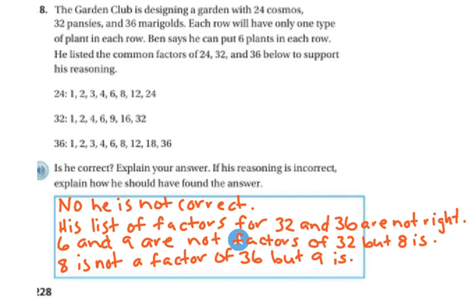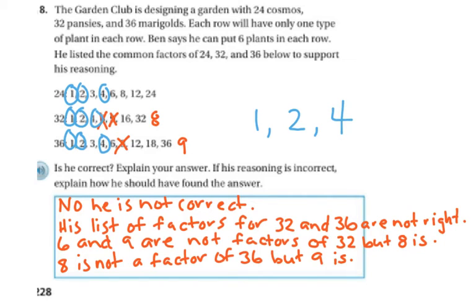No, he is not correct. He lists the factors for 32 and 36, but they're not right. 6 and 9 are not factors of 32. 8 is not a factor of 36, but 9 is. So the factors they have in common are 1s, 2s, and 4s, and that's it. He could only put them in rows of 1, rows of 2, or rows of 4. So 6 is not an option.